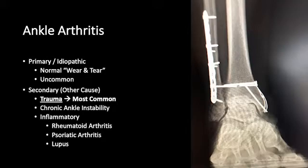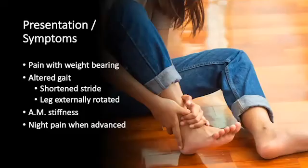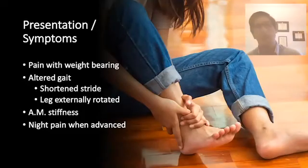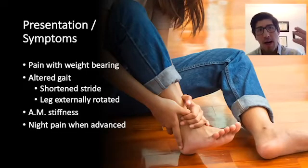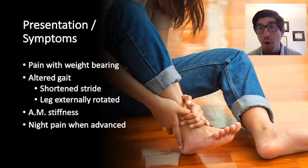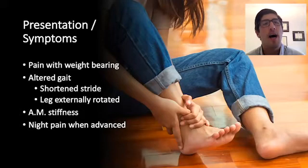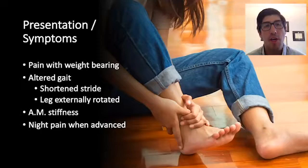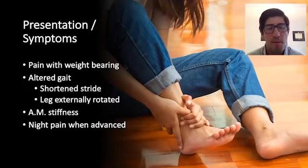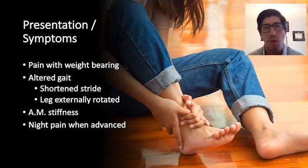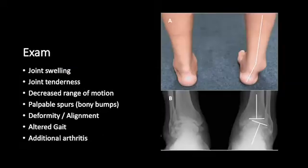Inflammatory arthritis as well — those with rheumatoid arthritis or lupus, et cetera. Common presentations of ankle arthritis are pain with weight-bearing, altered gait, shorter stride, leg externally rotated — which can lead to further problems in the knee, hip, and back. Often stiffness in the morning, stiffness throughout the day, and night pain, especially when it gets advanced. These are all problems that lead to arthritis being very debilitating.